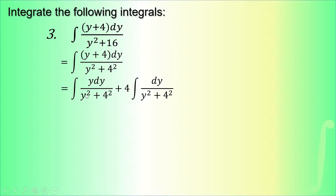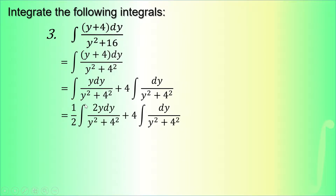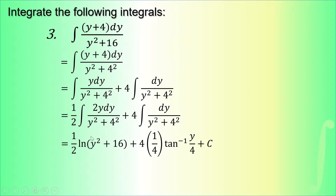For the first integral, we use the inverse logarithm formula. The differential of y² is 2y dy, so we multiply by one-half outside and add 2 on the numerator: (1/2) ∫ 2y dy / (y² + 16), giving (1/2) ln(y² + 16). For the second integral, we use the arctan formula with a = 4, giving (1/4) arctan(y/4).